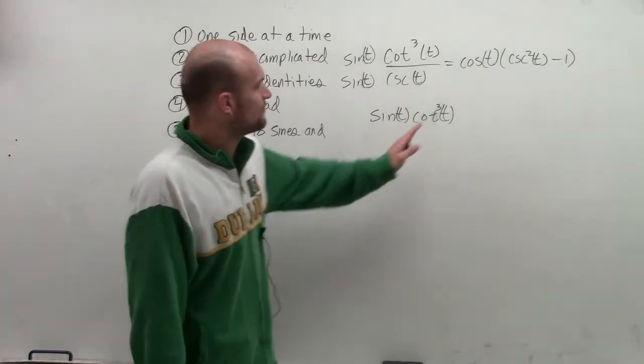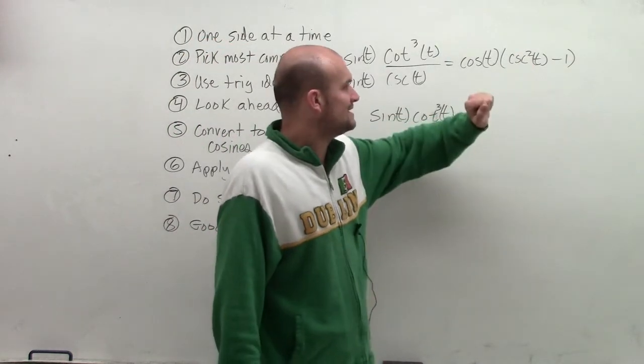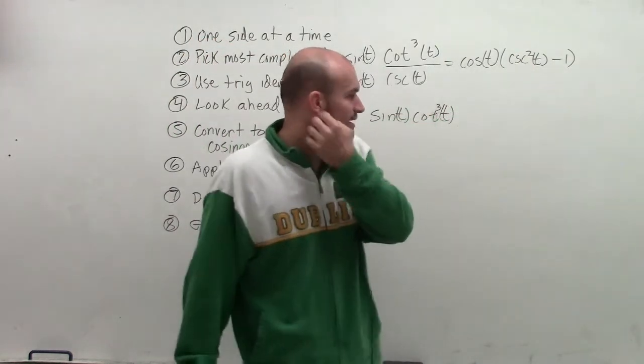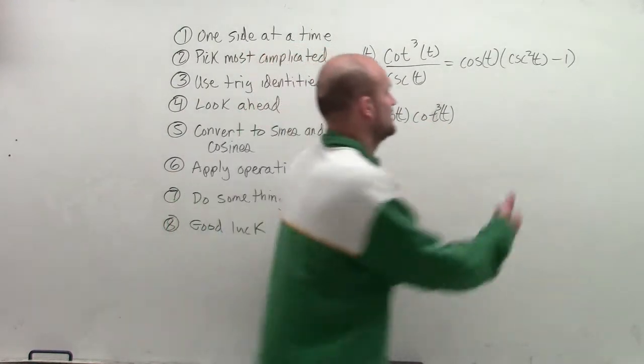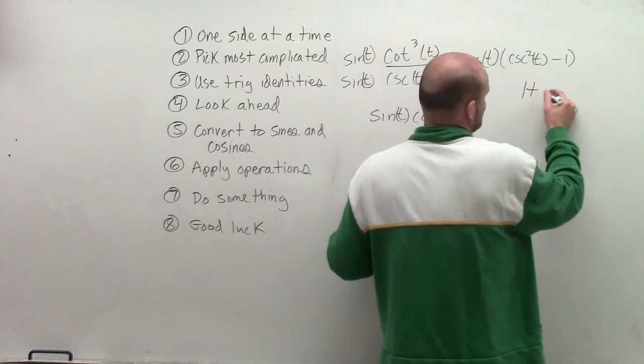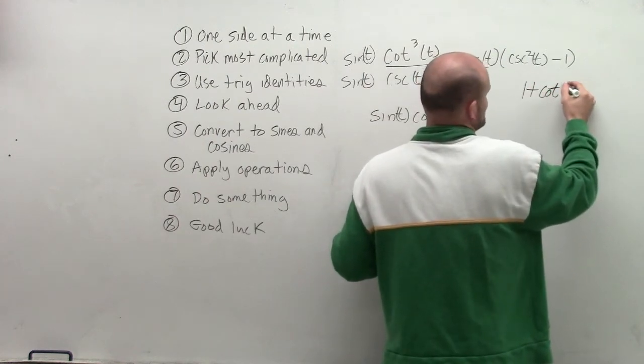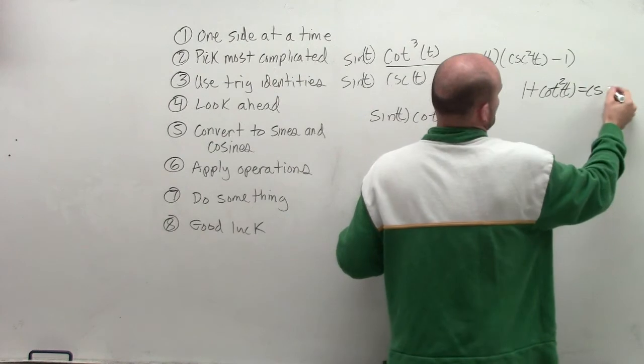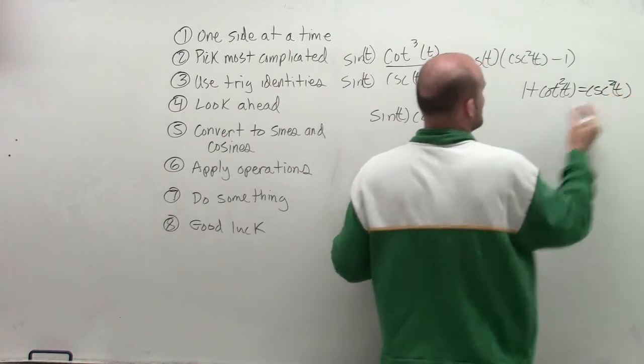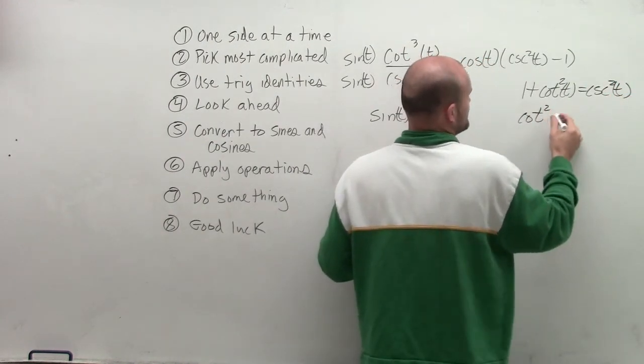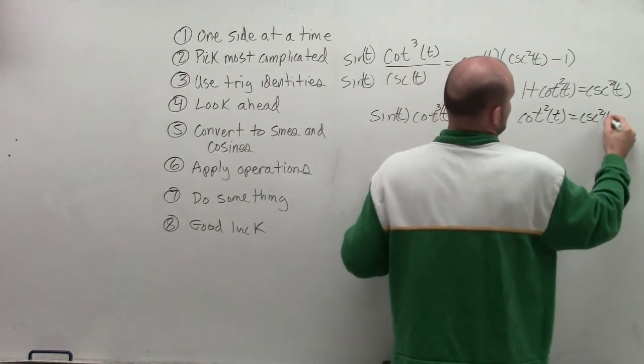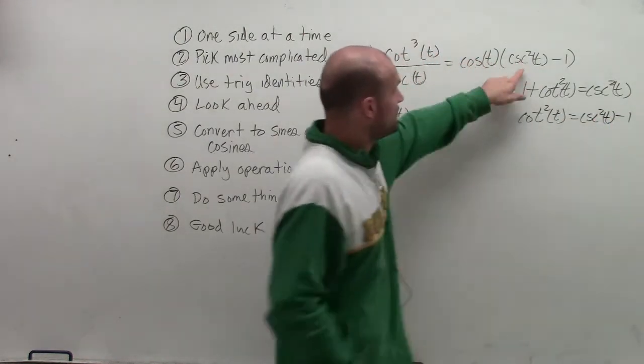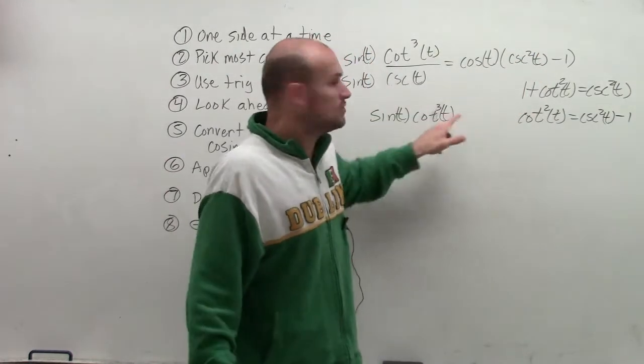Now the next thing I can do is, well, I notice that I have cosecant squared minus 1. And here I have cotangent cubed. So I need to look at my Pythagorean identity. And I realize that 1 plus cotangent squared of t is equal to cosecant squared of t. So therefore, we know that cotangent squared of t is equal to cosecant squared of t minus 1. So therefore, this is equal to cotangent squared.